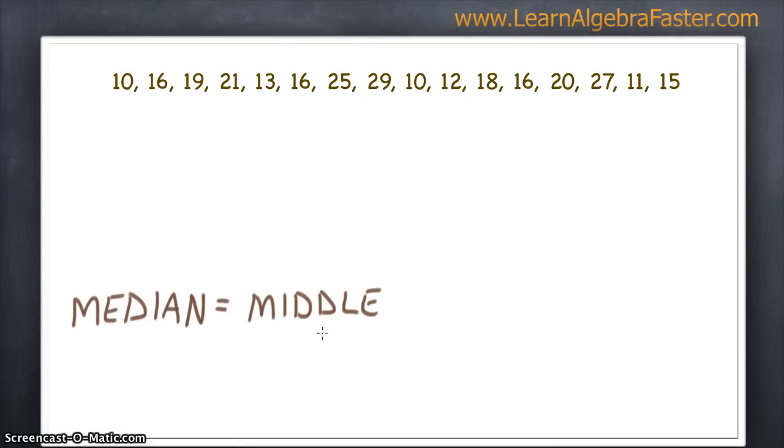For this set of numbers, we'll first need to put everything in order. For median, it's important to order all the numbers from least to greatest. We'll start off, and it looks like 10 is the least number that we have, so we'll put it first.